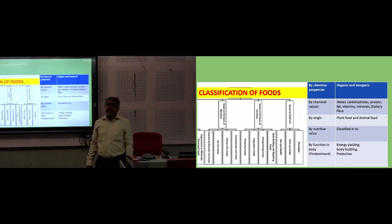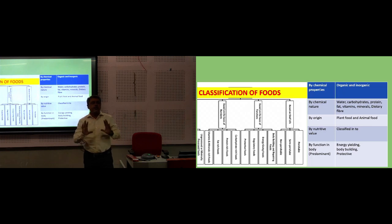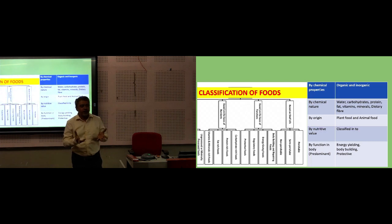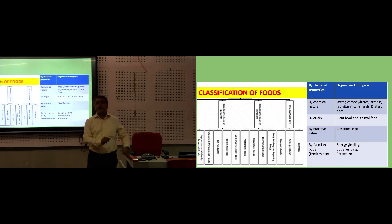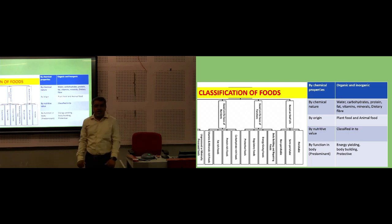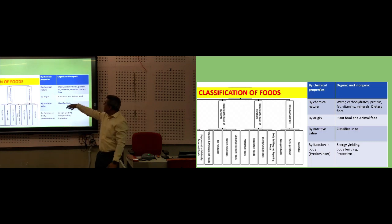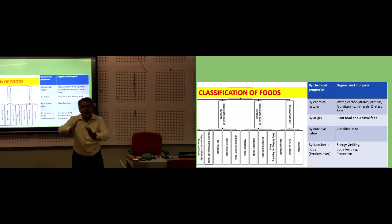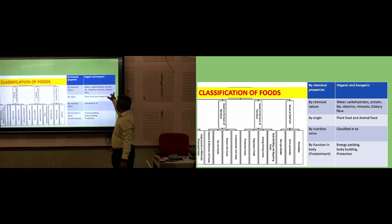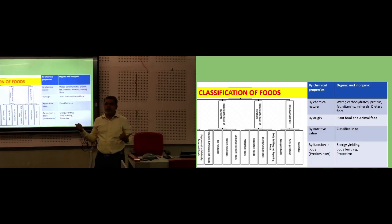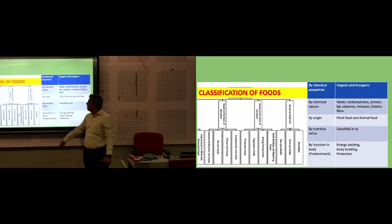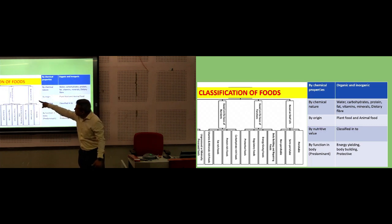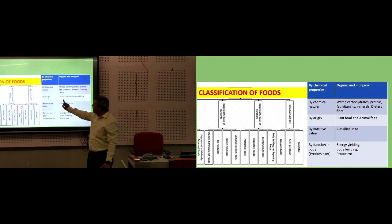In many books you will find classification of foods or types of foods. Food classification includes: by chemical properties — whether organic or inorganic; by nutrient composition — water, carbohydrate, protein, vitamins, minerals, dietary fiber; by origin — vegetarian or non-vegetarian, plant origin or animal foods; and by nutritive values. Food can be classified based on its various characteristics.